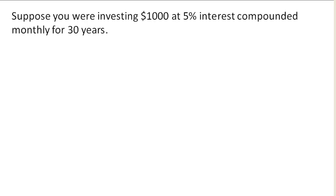So suppose we're investing $1,000 at 5% compounded monthly for 30 years. So I know that my initial amount is 1,000, my interest rate is 0.05. We're compounding monthly, so 12 compounds in a year. And we're doing this for 30 years.